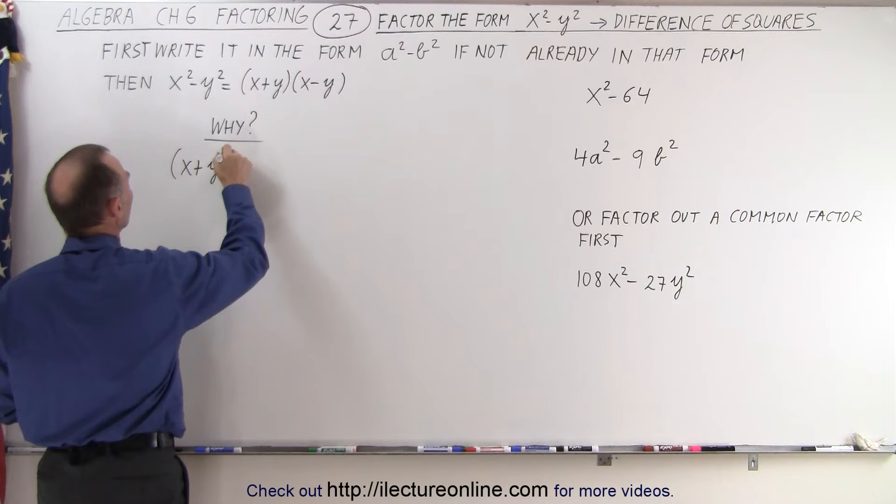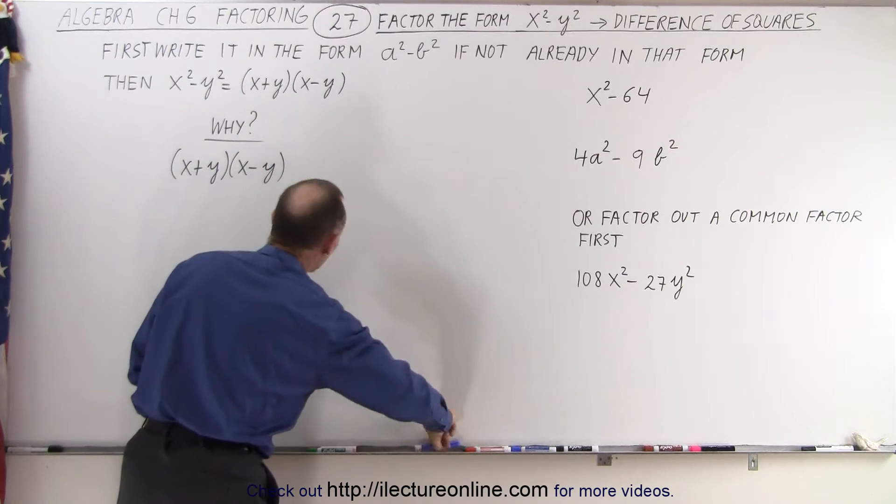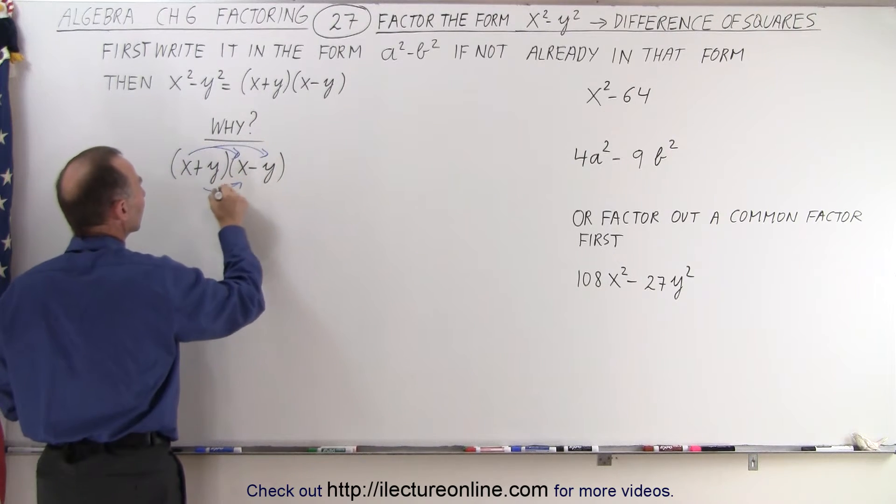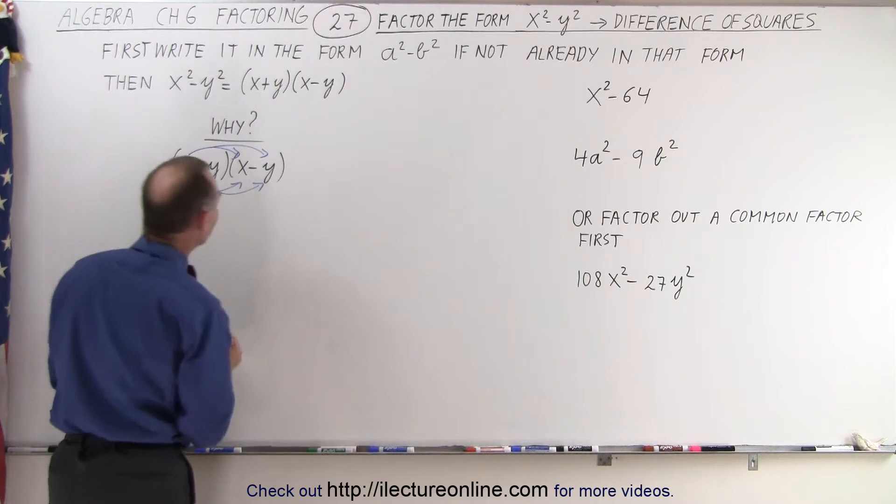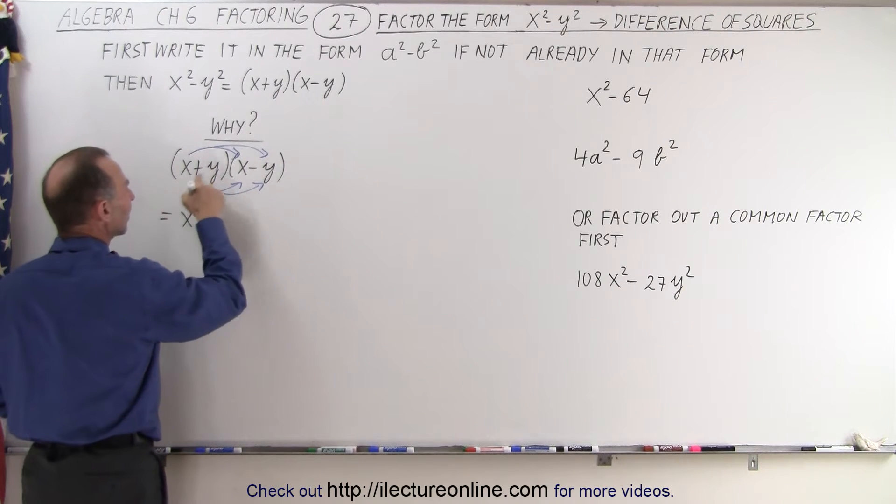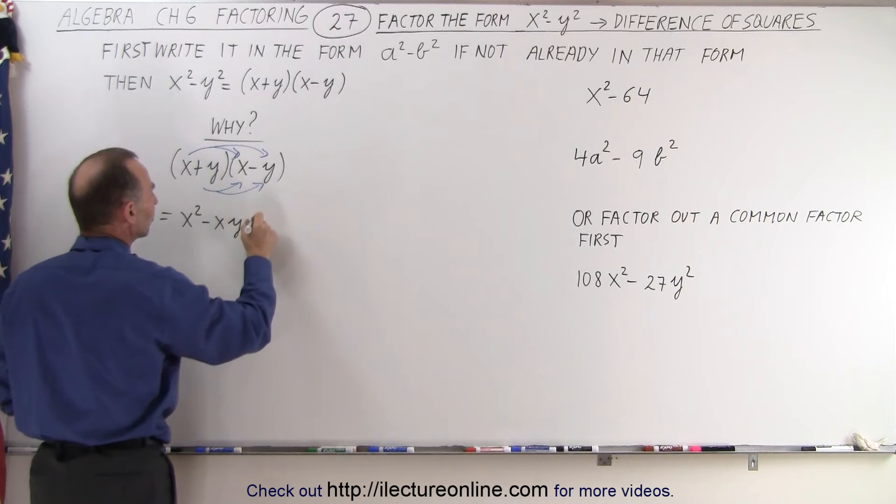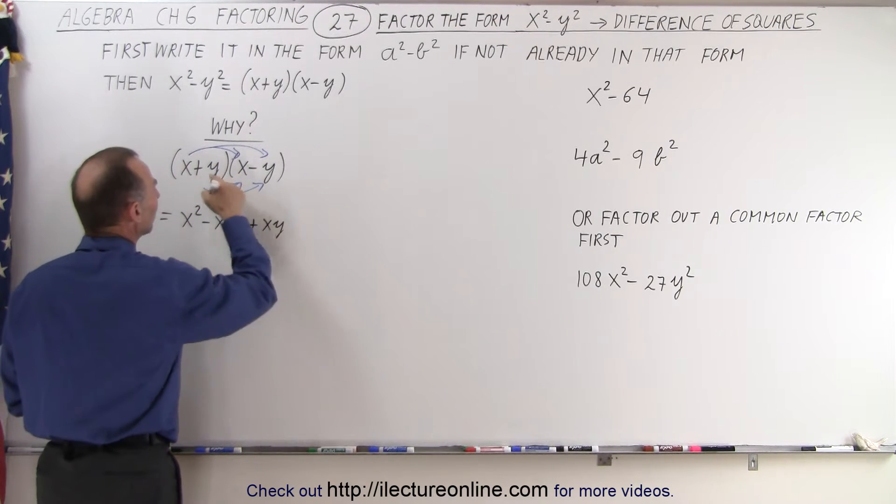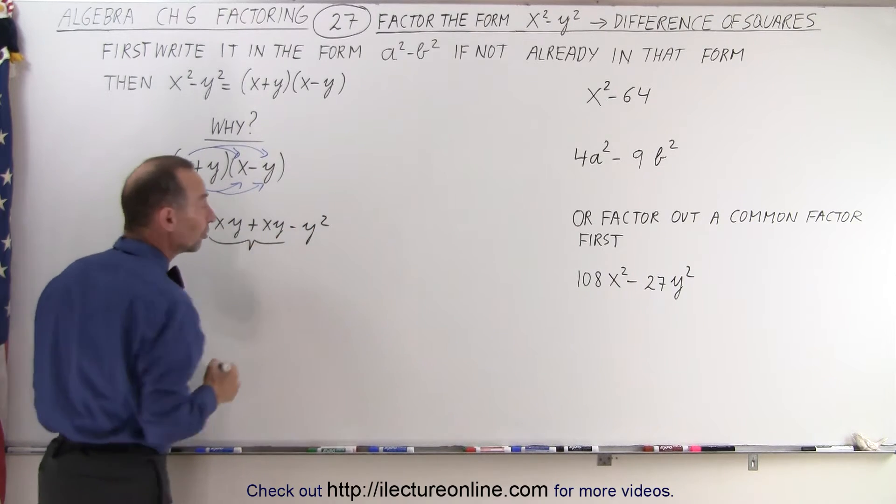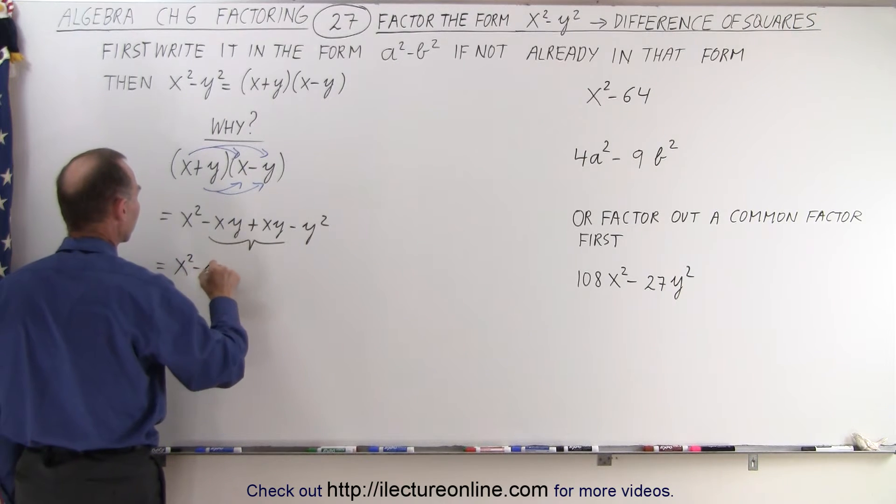x plus y, multiply times x minus y, so we'll use the distributive property. We're going to multiply the first x by both the x and the negative y, and the y by the x and the negative y. So when we do that, we get the following. This is equal to x times x, which is x squared, x times the negative y, which is minus xy, y times the positive x, which is plus xy, and y times the negative y, which is minus y squared. Notice that the two middle terms cancel out, which means we're now left with x squared minus y squared.